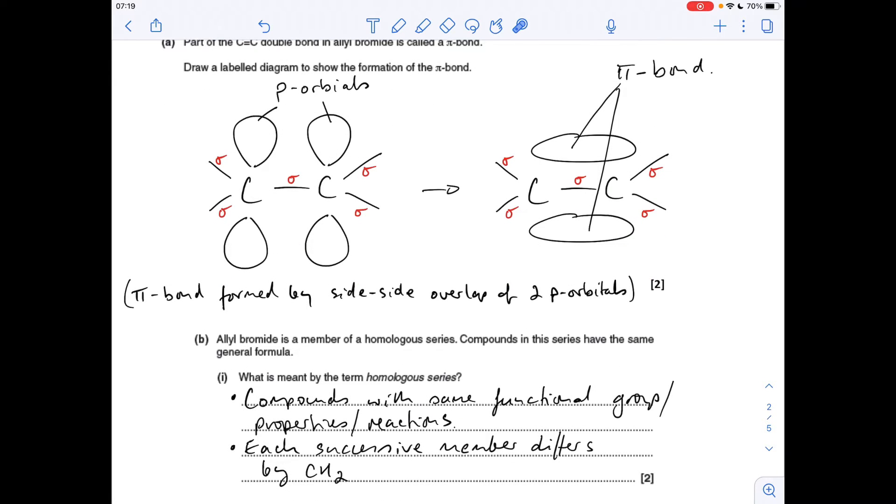Part B now, we've got to define the term homologous series. So there's two things we'll have to say. First bit, compounds with the same functional group, or you could say same properties or same reactions. And then you've got to say that each successive member differs by a CH2.